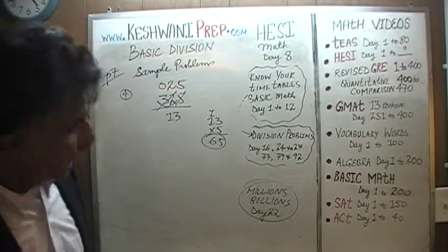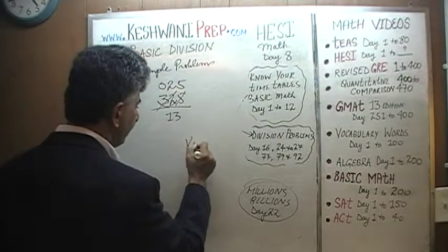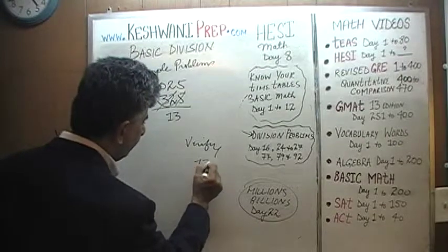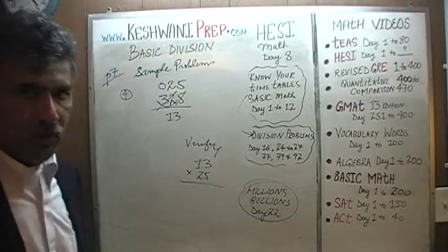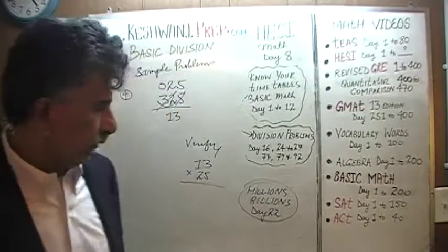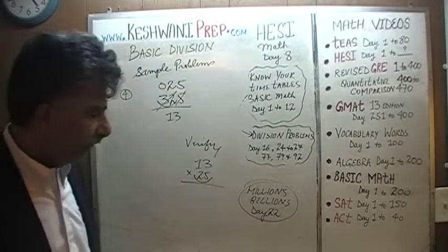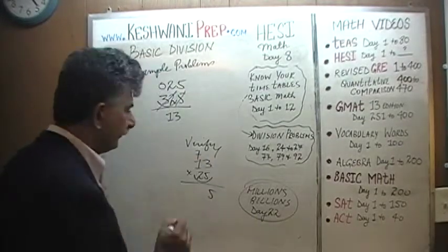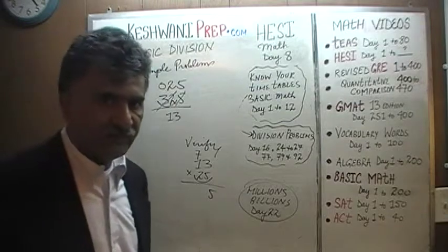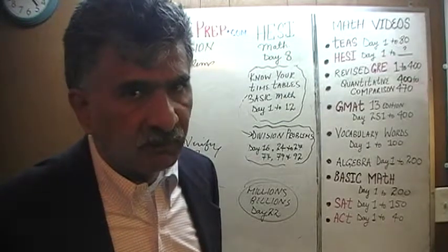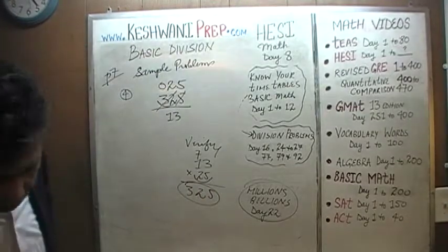Now let's verify: what is 13 times 25? We are not going to multiply by 5 and then by 2 separately — we multiply the whole thing by 25 at once. 25 times 3 is 75 — that's the 5, carry 7. 25 times 1 is 25, plus 7: 25 plus 5 would have been 30, so 25 plus 7 is 32. There you go — 325. That was number 4.